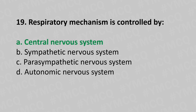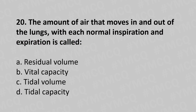Now let's move to question number twenty. The amount of air that moves in and out of the lungs with each normal inspiration and expiration is called: option a, residual volume; option b, vital capacity; option c, tidal volume; option d, tidal capacity. And the answer is option c, tidal volume.